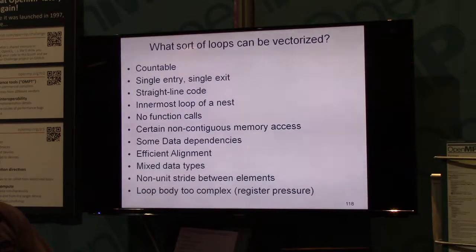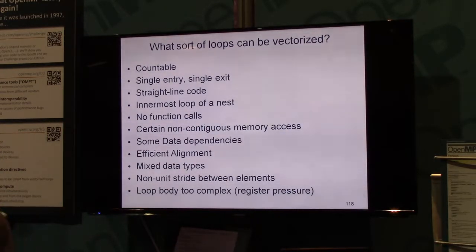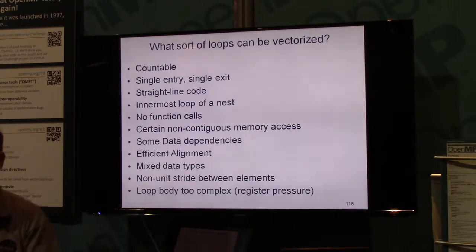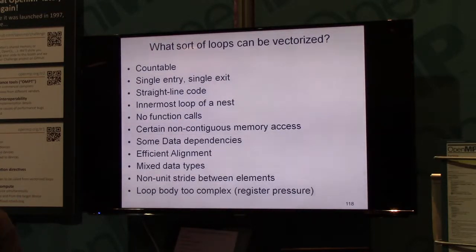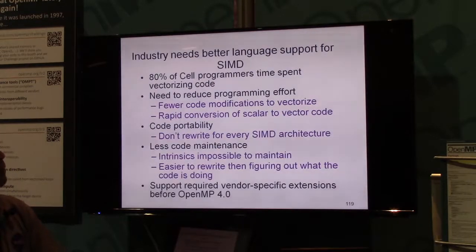These are some of the reasons why auto-vectorization is going to have difficulty. What sorts of loops can be vectorized? It turns out it's actually fairly complex. These loops have to be countable, single exit, single entry, straight-line code — even if statements in there are problematic. Everything else has to be vectorizable potentially. It can only address certain non-contiguous memory addresses, with alignment difficulties and things like that. This is just listing some of the fundamental difficulties of auto-vectorization, which is essentially driving the need for the industry to call for better language support for SIMD.